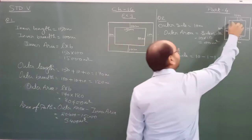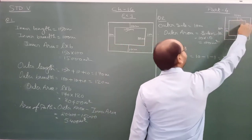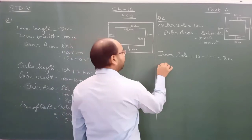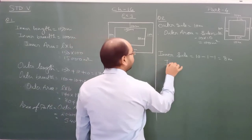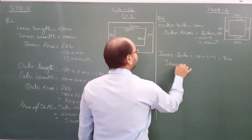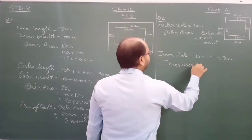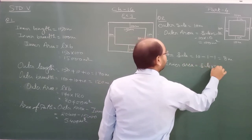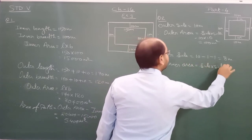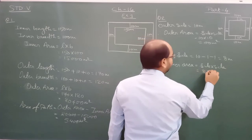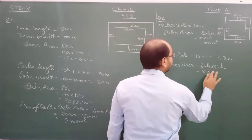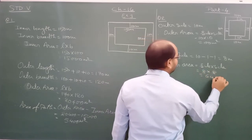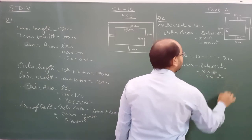The inner square has a side of 8 meter. So inner area equals side into side, that is 8 into 8, which is equal to 64 meter square.